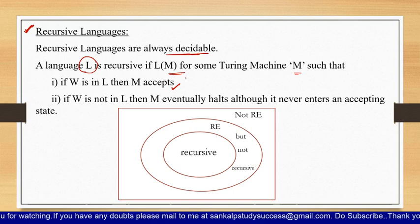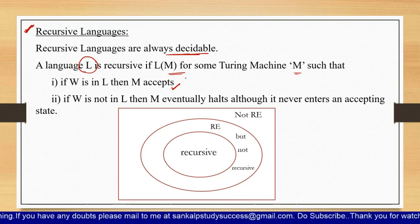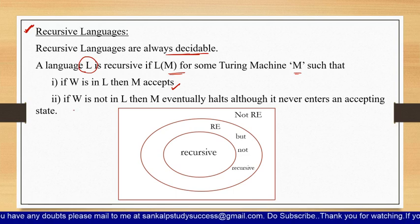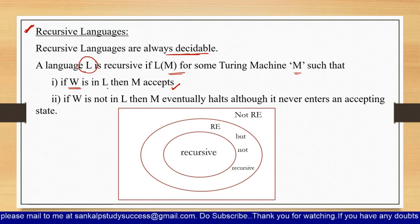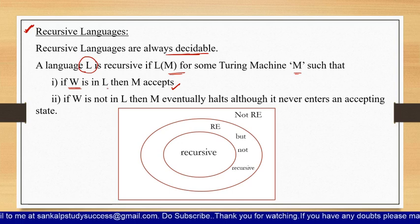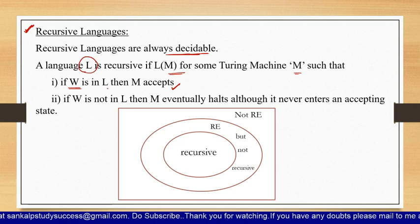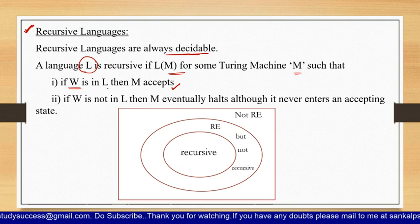So if your input is in L, the Turing machine accepts. If it is not in L, the Turing machine halts somewhere but that will not be the final state, meaning the input string is rejected. The key point is the input string must halt — only then you can say it is a recursive language and it is decidable.